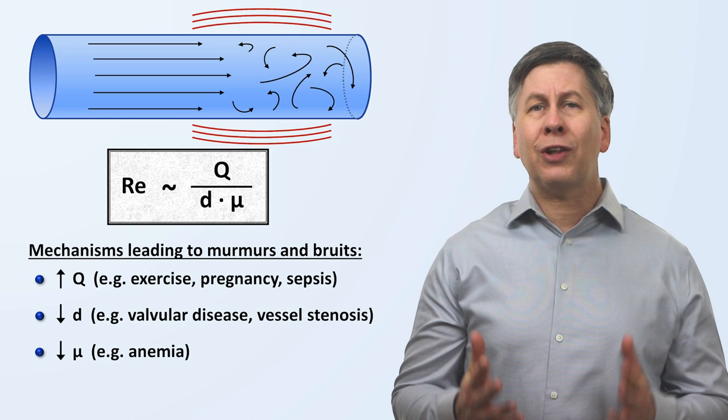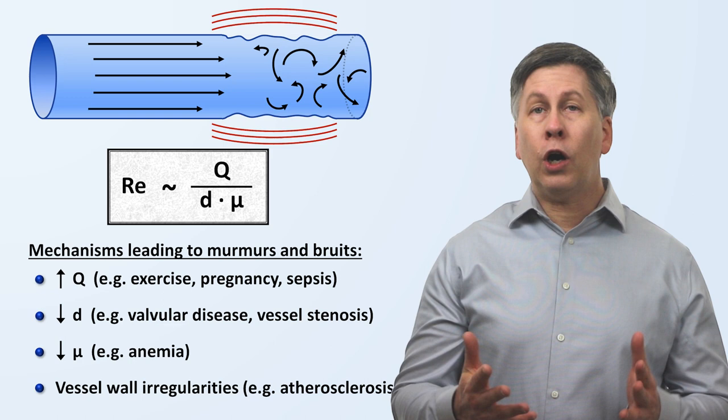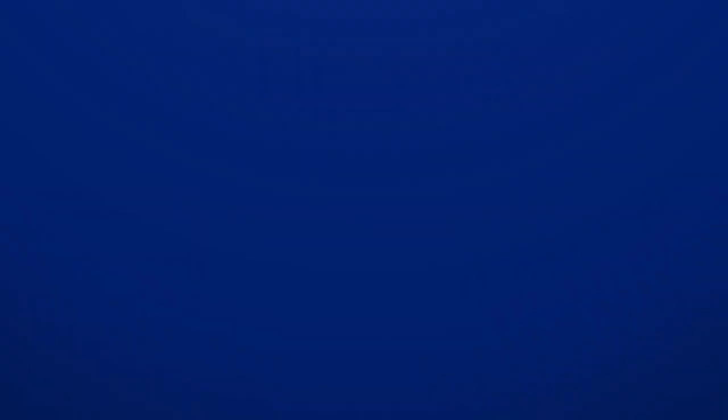And there is one other major mechanism for causing murmurs and bruits, which falls outside of the classic Reynolds number equation: irregularities in the vessel wall. For example, those seen in atherosclerosis. Surface irregularities also play a role in murmurs caused by valvular heart disease.